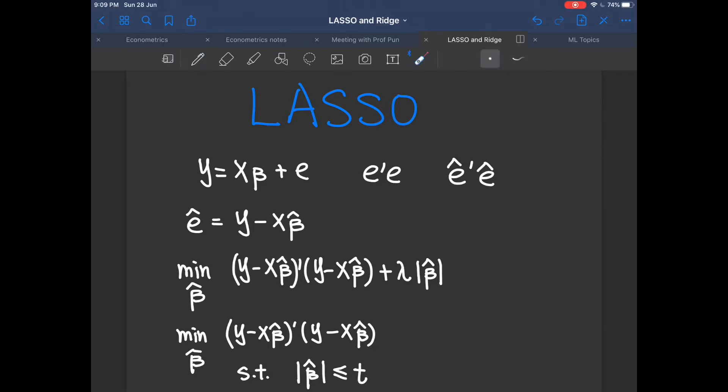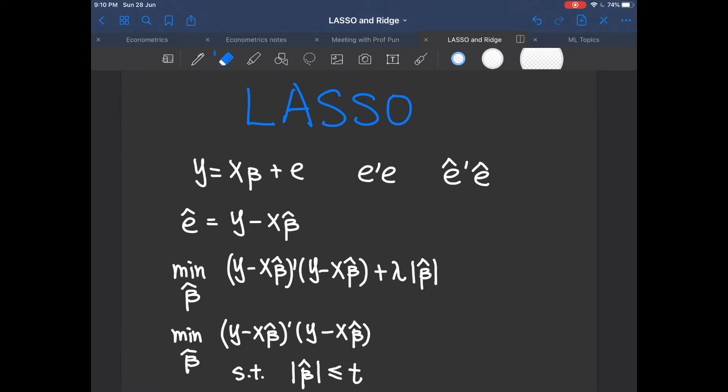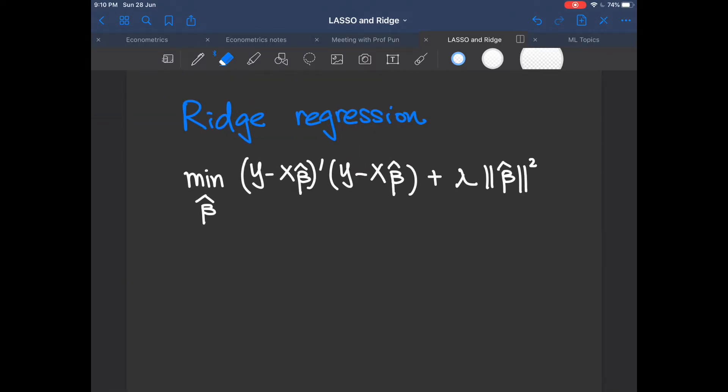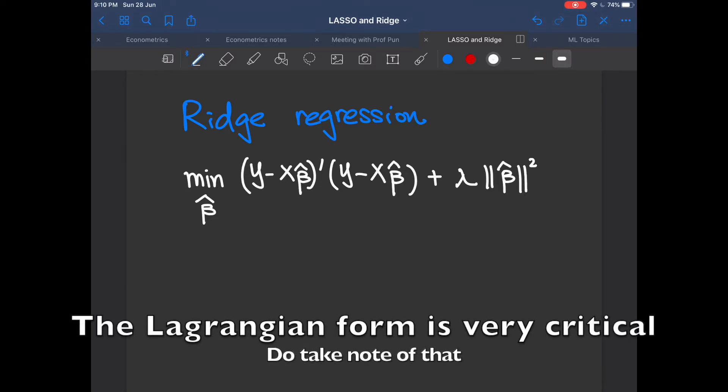If you take a close look at the objective function of the Lasso regression, does it look familiar to you? If you have watched my previous video on ridge regression, you should notice that Lasso's objective function is almost identical to the ridge regressions, except now we change the L1 norm to the L2 norm. In other words, we say that we change the absolute value to the square of beta hat.